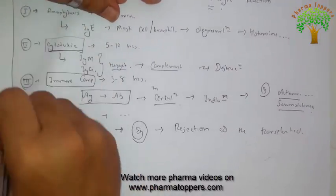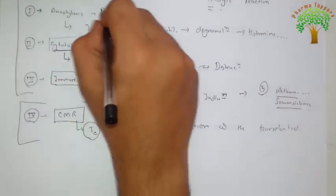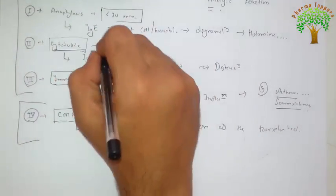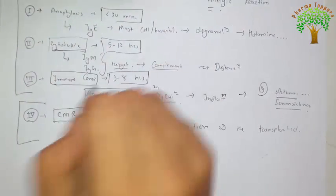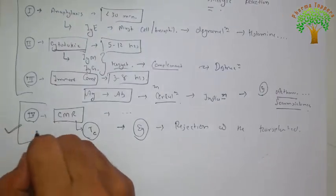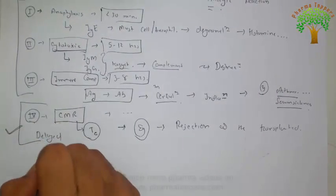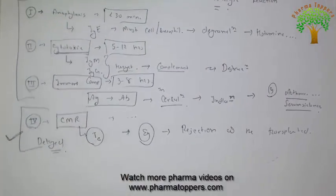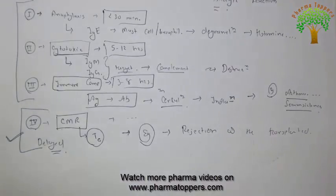Types 1, 2, and 3 are immediate types with time periods of 30 minutes, 5 to 12 hours, and 3 to 8 hours respectively, while type 4 is the delayed type. This covers all about allergic reactions, their types, and which immunoglobulins are involved. Please subscribe to PharmaToppers for other videos.